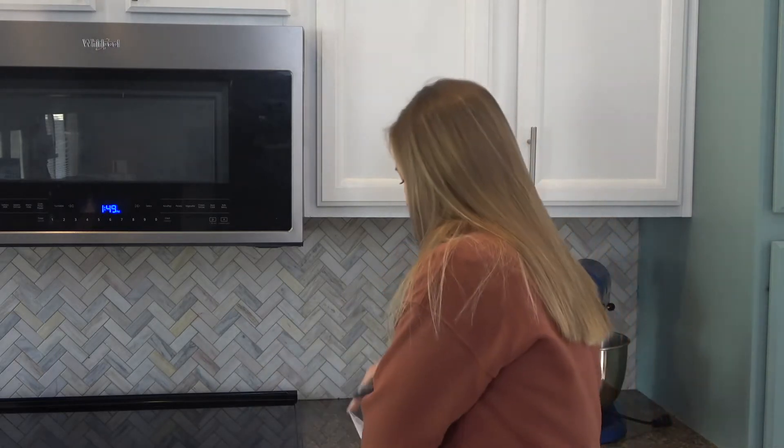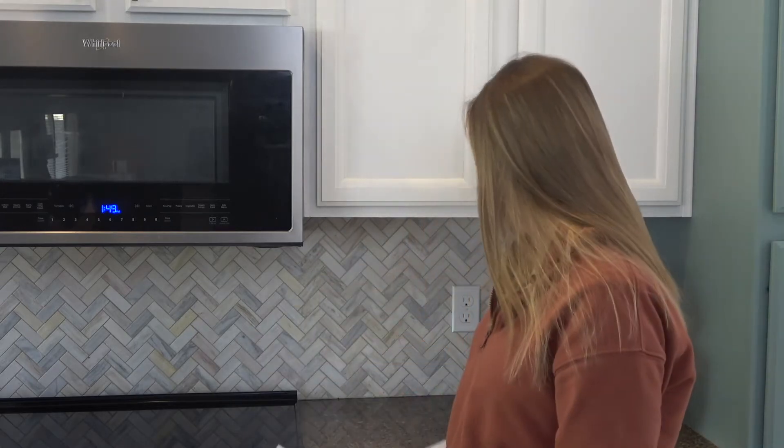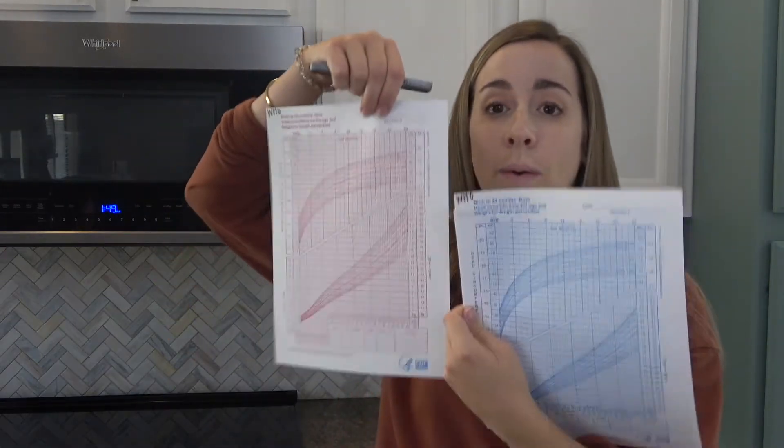There are two sets of growth charts — one from the World Health Organization and one from the CDC. We use the WHO growth charts for ages zero to two. Providers should always use the WHO growth charts for zero to two because the WHO data is more thorough, from a larger data set, and isn't as affected by confounding variables as the CDC data is for this age.